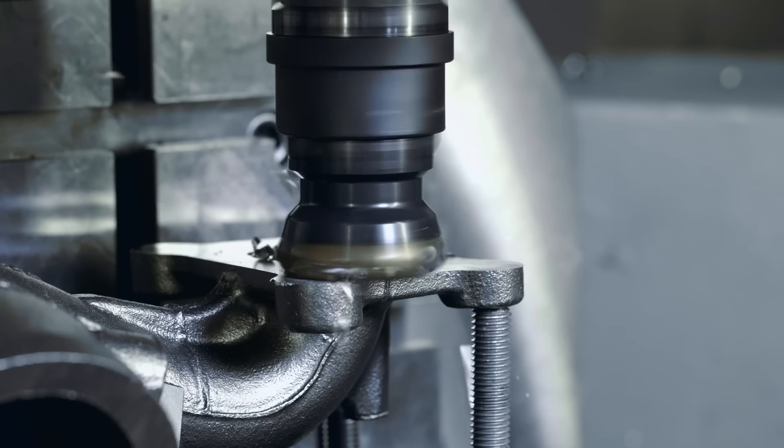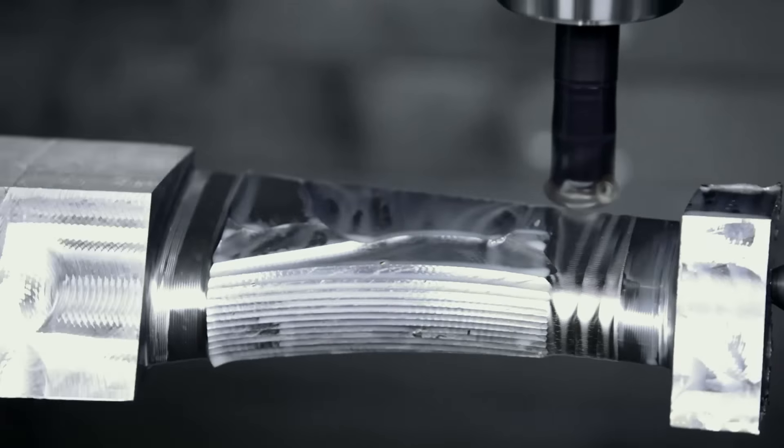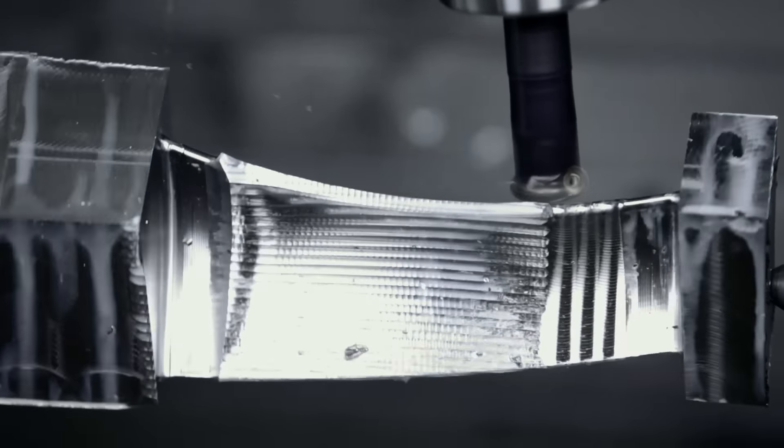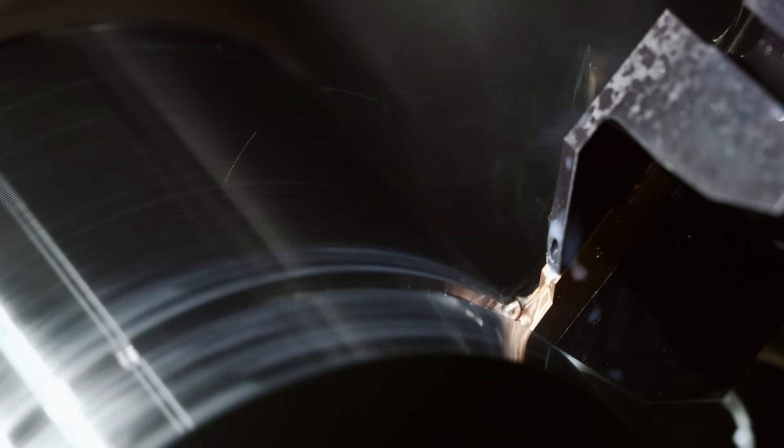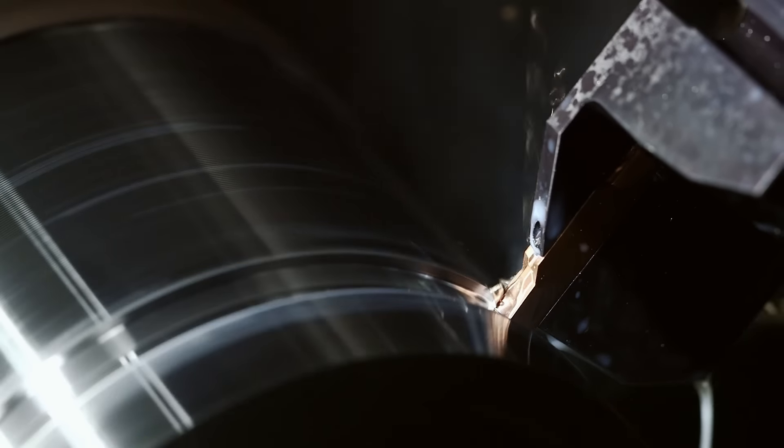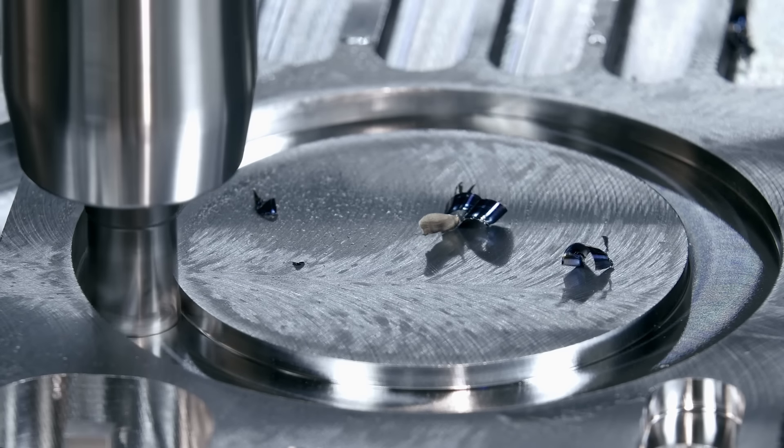Almost everything made of metal is machined with an insert. The insert has to withstand extreme heat and force, so it's made of some of the hardest material in the world.